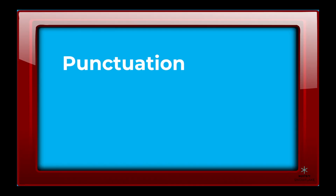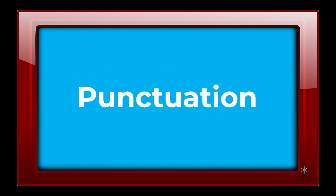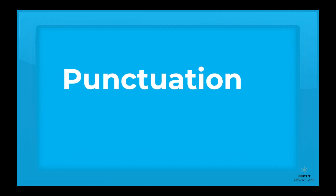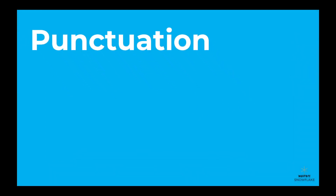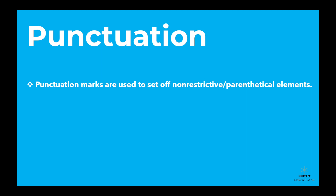Hi, today we're going to learn about punctuation and spelling. Let's start with finding out how to use punctuation to set off non-restrictive or parenthetical elements. Punctuation marks such as commas, parentheses, and dashes are used to set off non-restrictive or parenthetical elements.